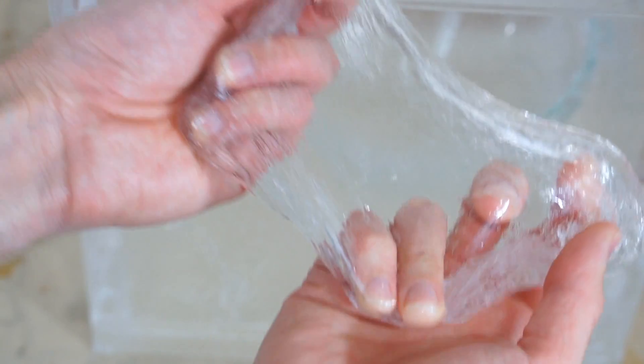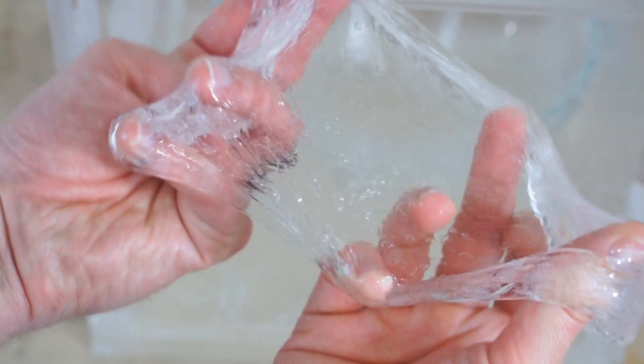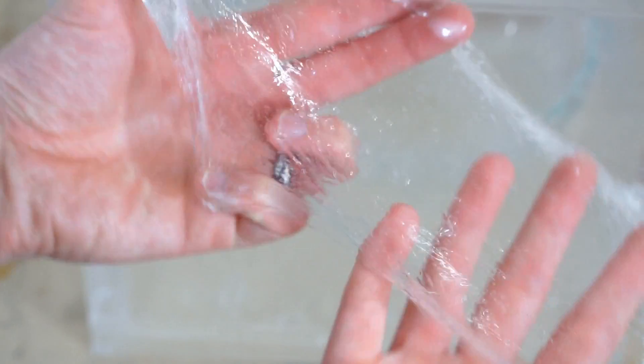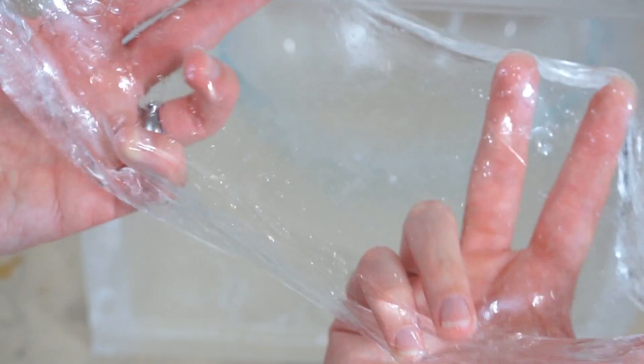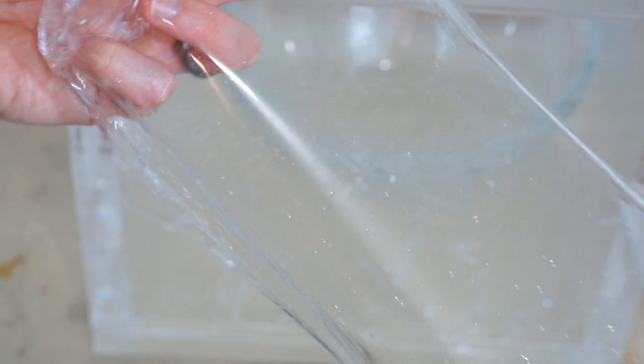Today I'm going to be making instant clear slime in the vacuum chamber. So normally you need a couple of days in order to make clear slime for all the air bubbles to get out, but if you have a vacuum chamber you can do it almost instantly.